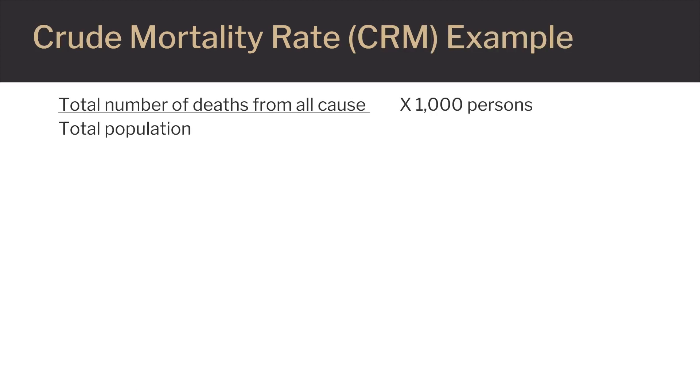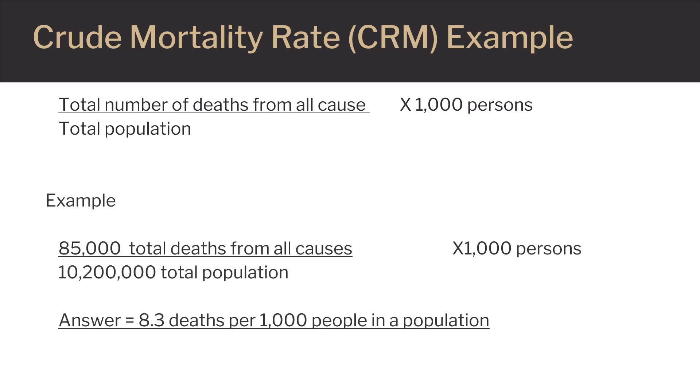This slide details how to calculate a crude mortality rate. Note that the answer is most commonly expressed as x deaths per 1,000 people in a general population.